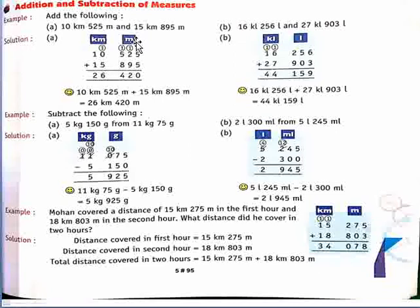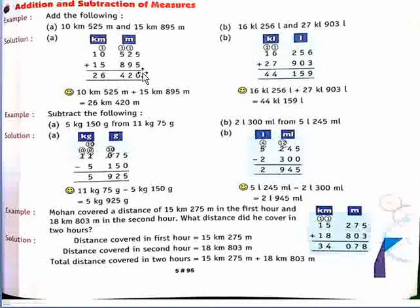Now 1 plus 2 plus 9 is 12, so 2 niche likhenge and 1 carry karenge. Now 1 plus 5 plus 8 is 14, so 4 niche likhenge and 1 carry karenge. Now 1 plus 5 is 6, 1 plus 1 is 2. So our answer is 26 km 420 meter. Now same subtract karenge.